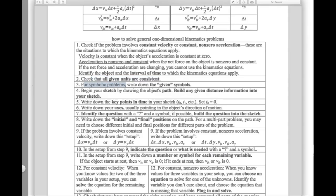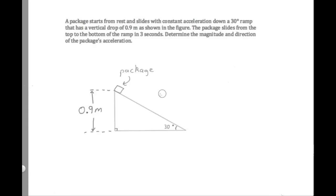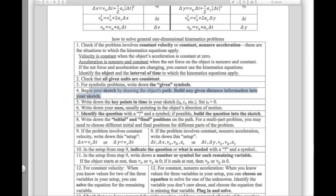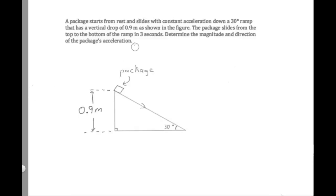We should draw the object's path in our sketch. We can use the sketch we were given and say the object will be moving along this line — the line representing the surface of the ramp — which also represents the path of the package as it goes from the top to the bottom. We should build any given distance information into our sketch. The 0.9 meters and the 30 degrees have already been built into the sketch.